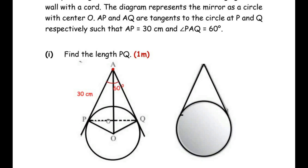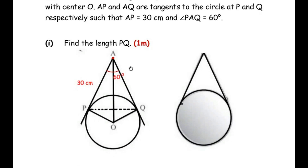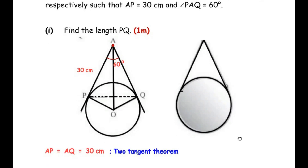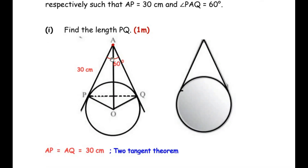To find the length of PQ, let us first find the length of AQ. Since AP and AQ are tangents to the circle coming from the same external point A, we apply the two tangent theorem, which states that any two tangents from the same external point have the same length. So AQ is also 30 cm. Therefore AP equals AQ equals 30 cm.